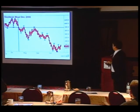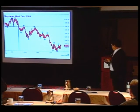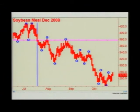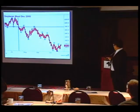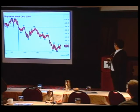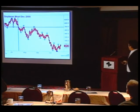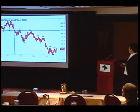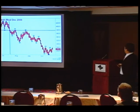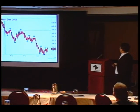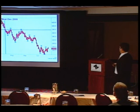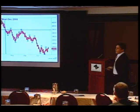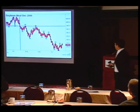Soybean meal had a very similar pattern to soybeans — they pretty much trade very similarly; same family. And this pattern has remained intact all the way down. I wanted to show this one because if we just close above that high, we'll finally — after a three- or four-month decline — have a close above the high that made the low. That's one of the opportunities I'll be looking at this week.